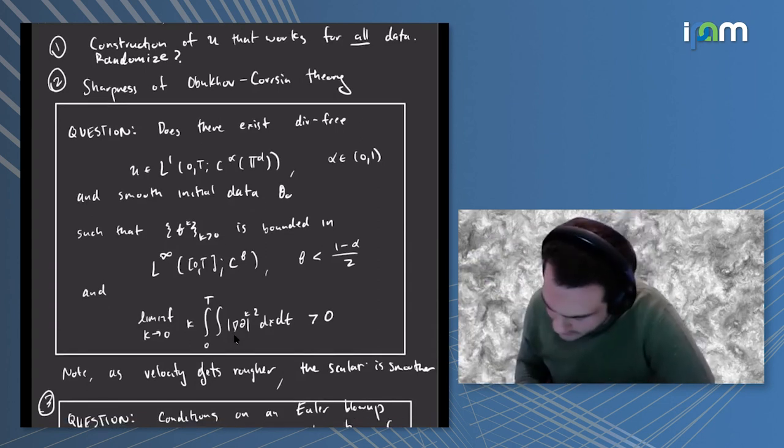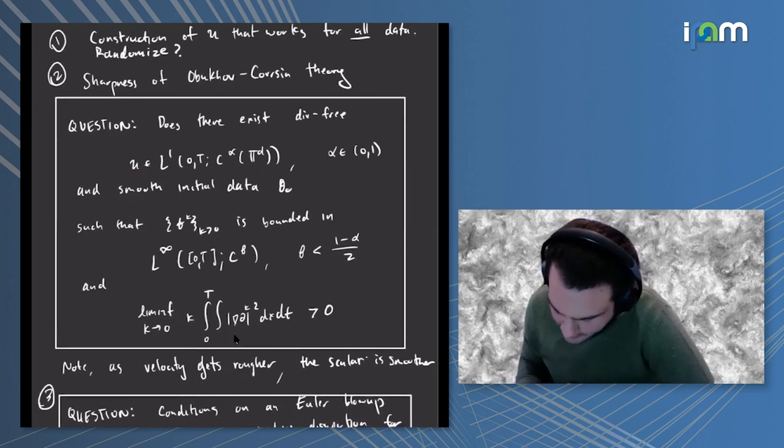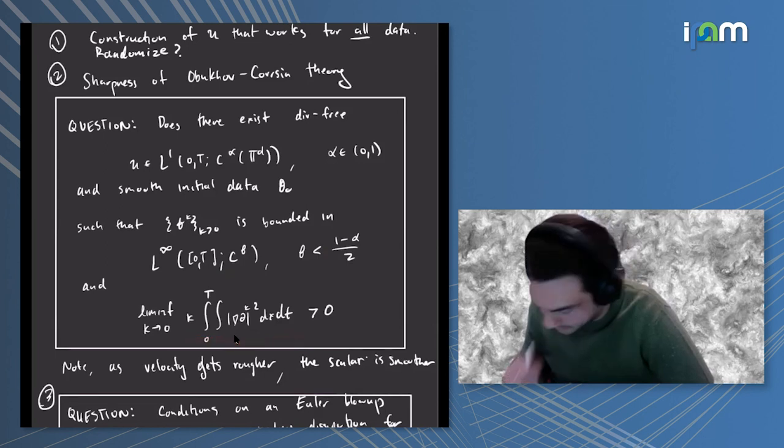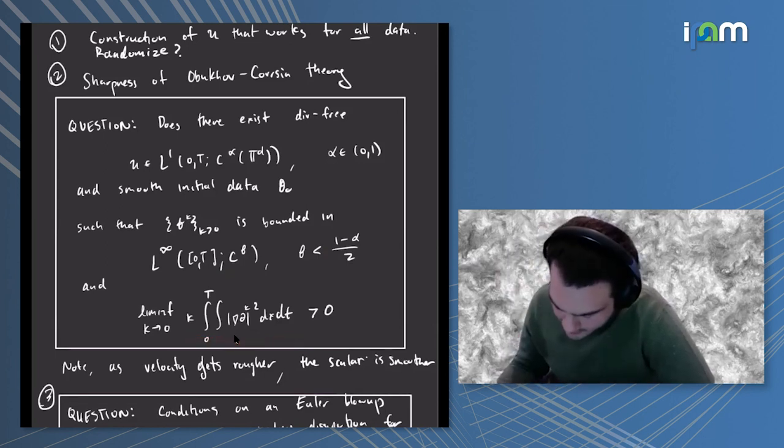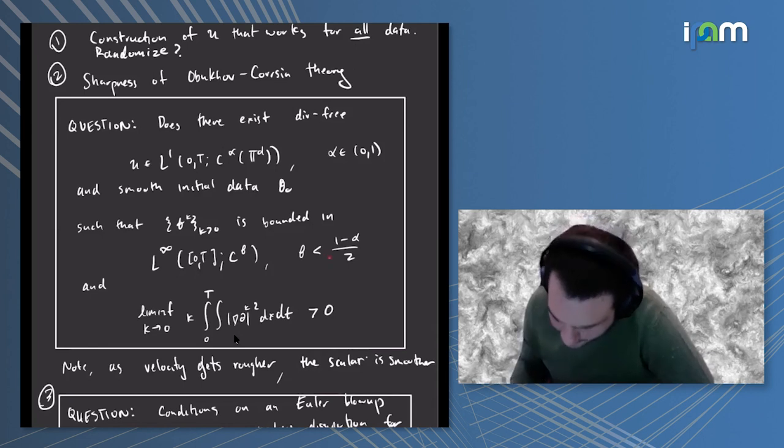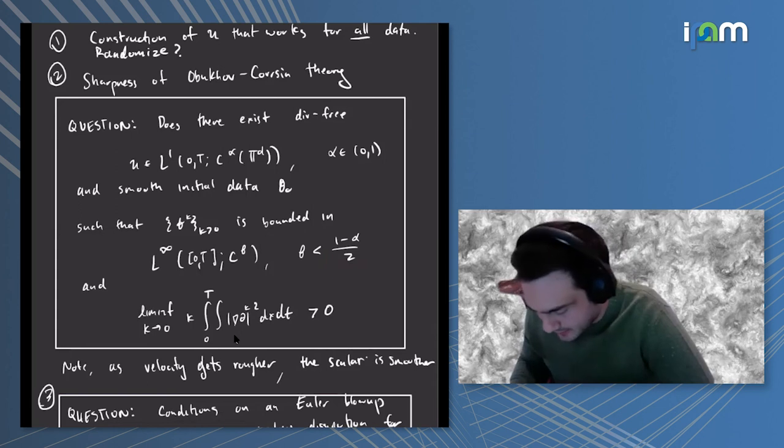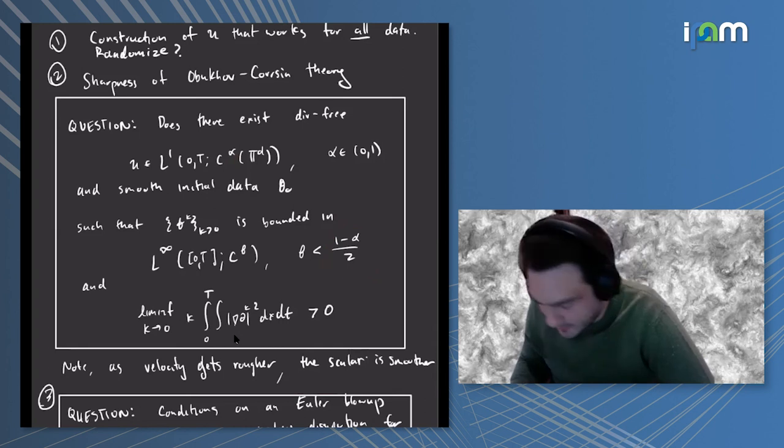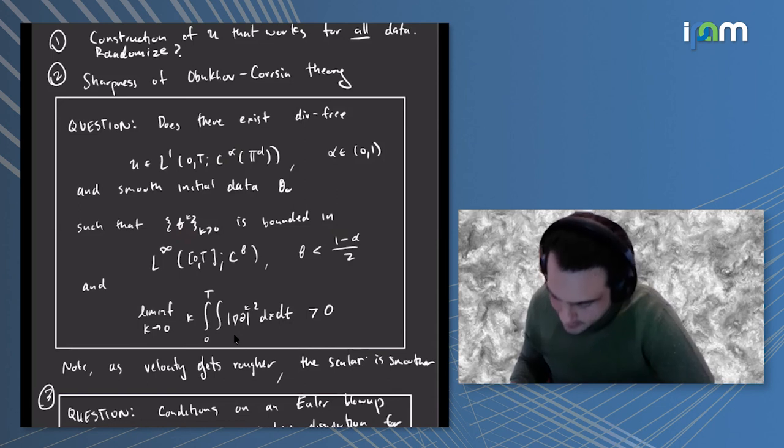Another thing which I think is very interesting is to show somehow that this Obukhov-Corrsin theory is always sharp at least in a mathematical sense. The question is: does there exist a divergence-free drift which is C^α and smooth initial data for the scalar such that this family is uniformly bounded in the C^β space with all beta less than this threshold value and moreover that this limit is positive? The significance is that you have dissipation with scalar exactly at the threshold space, but there's this interesting interplay as you make the velocity rougher, this number gets larger.